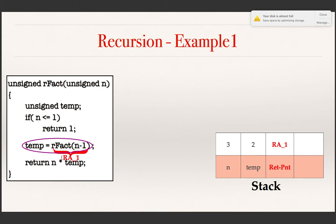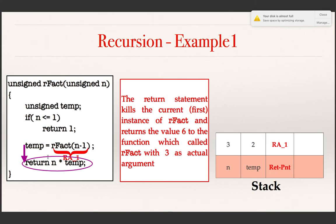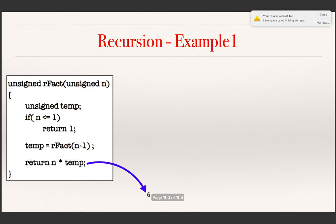The control now comes to the return statement in the first instance. This return statement causes the value n into temp to be evaluated — n is 3 and temp is 2, so the value is 6 — to be returned. The last instance of rFact is deleted and the control goes to the main function from which rFact was invoked with the value 3. So 3 factorial which is 6 is returned to the calling function.